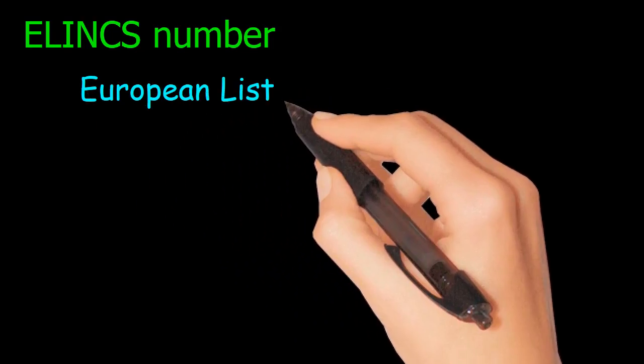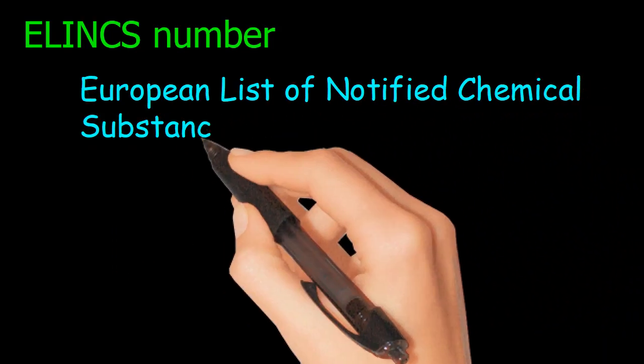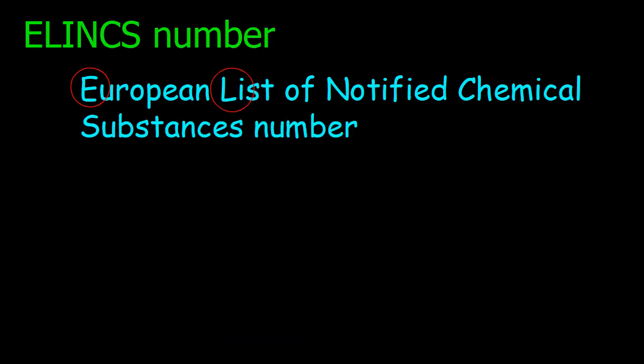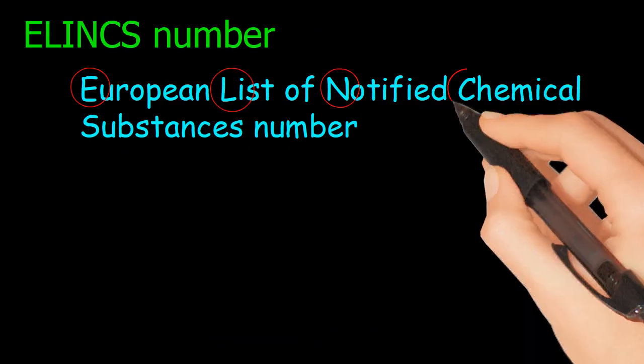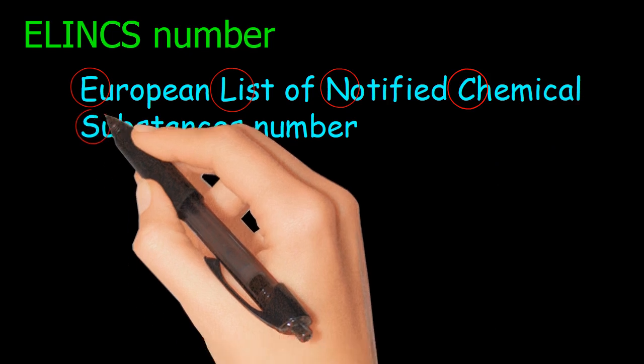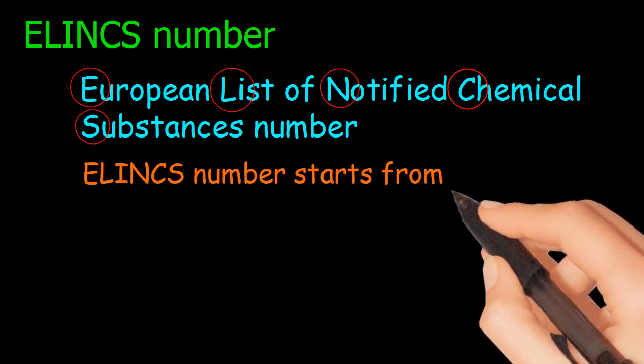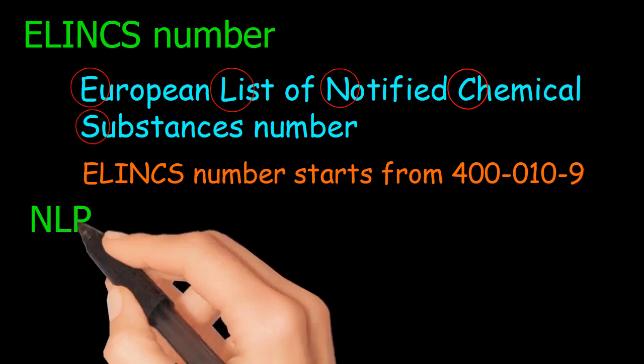ELINCS number: European List of Notified Chemical Substances number. ELINCS number starts from 400-010-9.